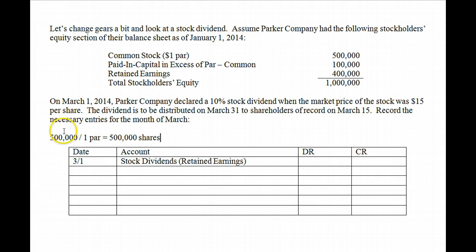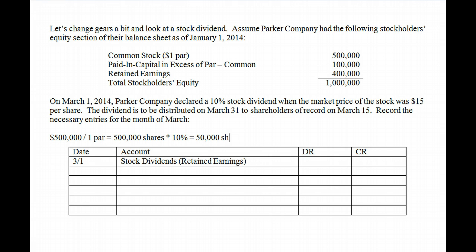It's 500,000 shares because $500,000 in the account divided by a $1 par gives you 500,000 shares — not just because that's the account balance. Times 10% gives 50,000 shares to distribute. Stock dividends are carried at market price, so 50,000 shares times $15 per share gives you $750,000 as the total dividend amount.